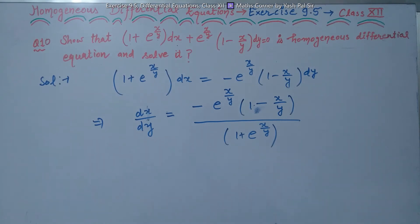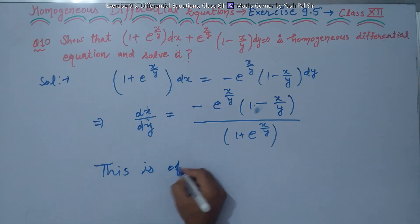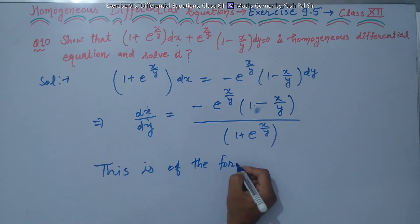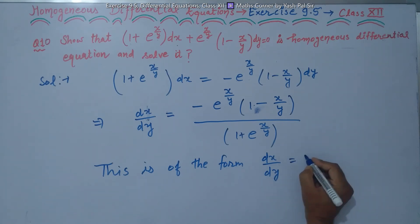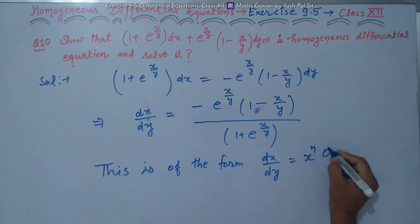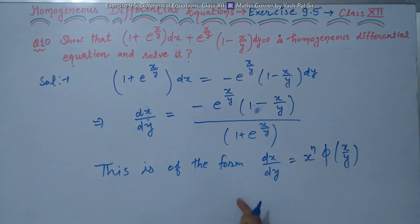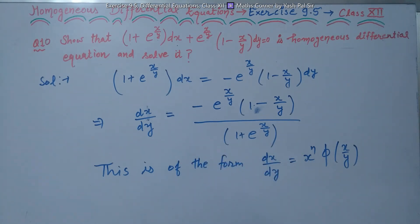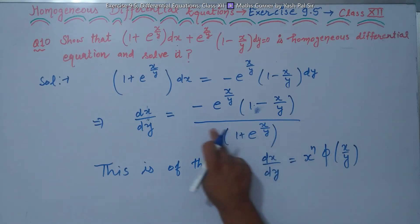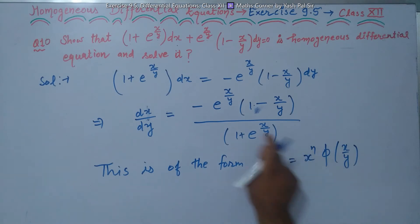We observe that the right-hand side is of the form dx/dy equals x^n times phi(x/y), where each and every term is in the form of x upon y. If we can express it this way, this is a homogeneous differential equation of degree n. Here, the degree of this differential equation is 0.